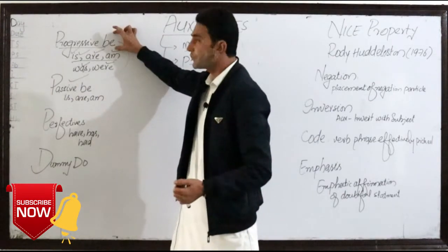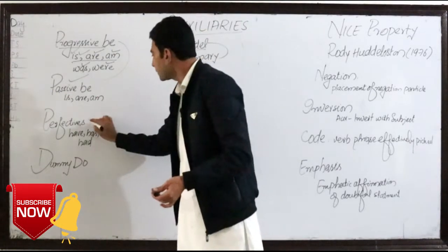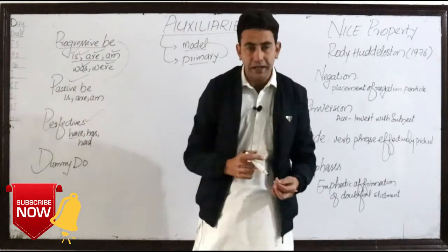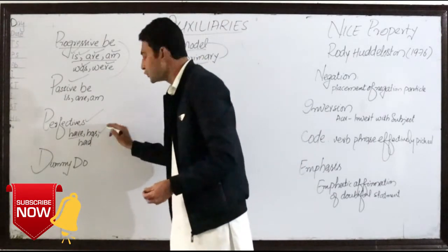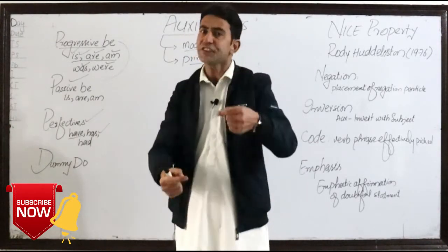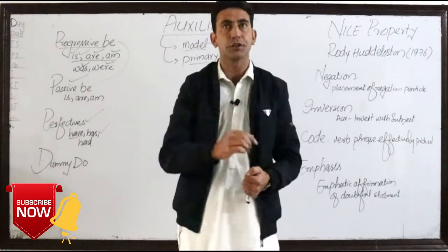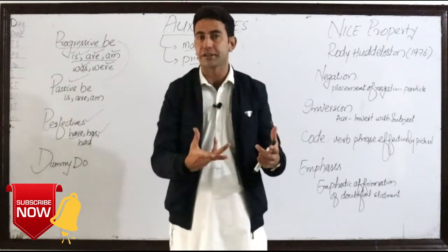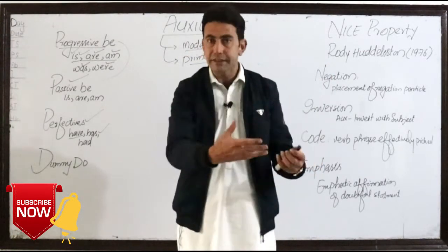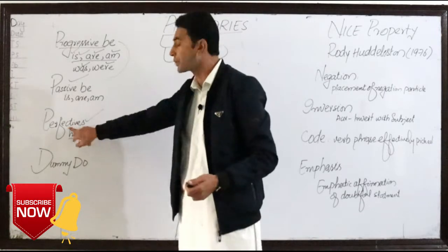One is used in active sentences and the other is used in passive construction. Then we have perfect HAVE. Perfect HAVE includes have, has, and had. Have and has are used when an action happened in the past but has its relevance in the present — for example, 'someone has broken the window' or 'someone has broken the chair.' The action occurred in the past but its effects exist in the present, so we use the perfect.